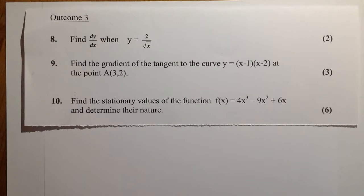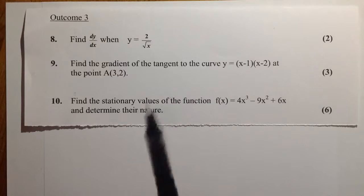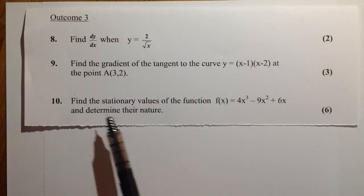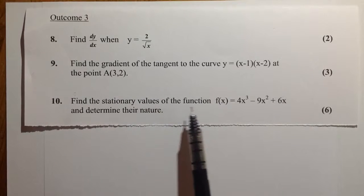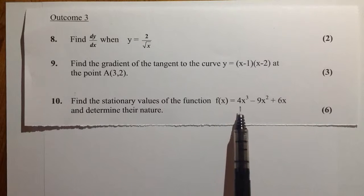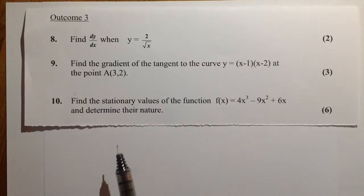This is Higher Maths, Unit 1, NAB, Outcome 3, and it's on the differentiation section. We're going to do question 10. Question 10 asks us to find the stationary values, or the stationary points, of the function f(x) = 4x³ - 9x² + 6x, and to determine their nature.